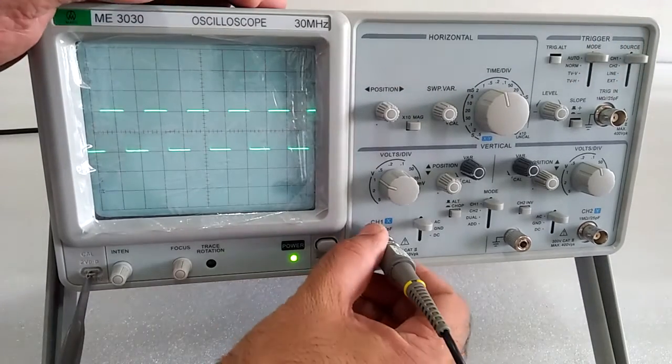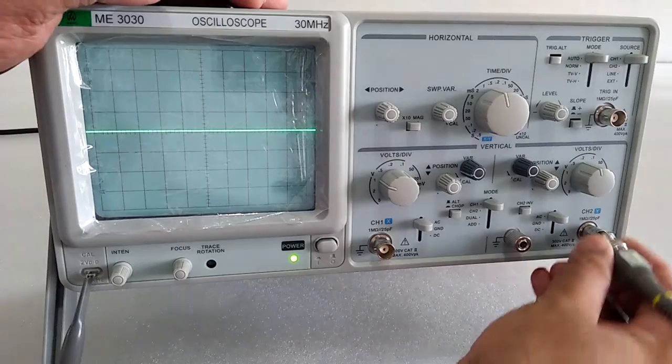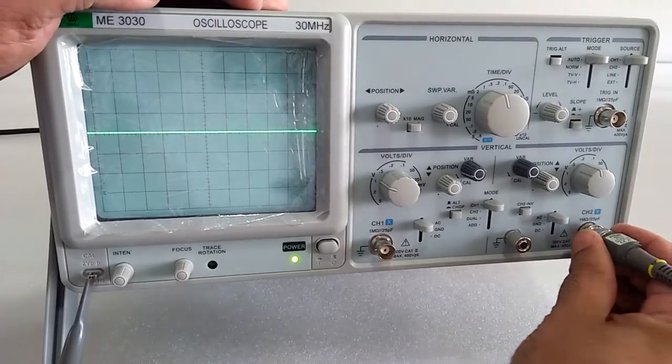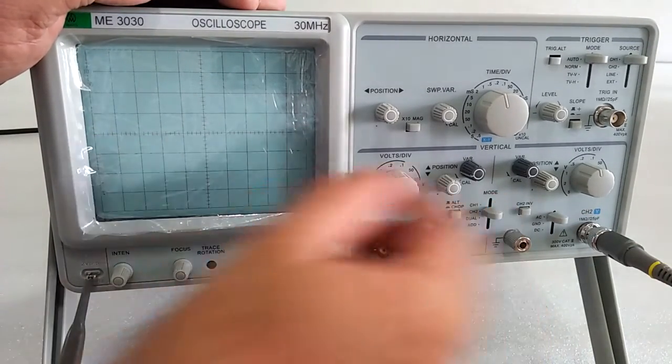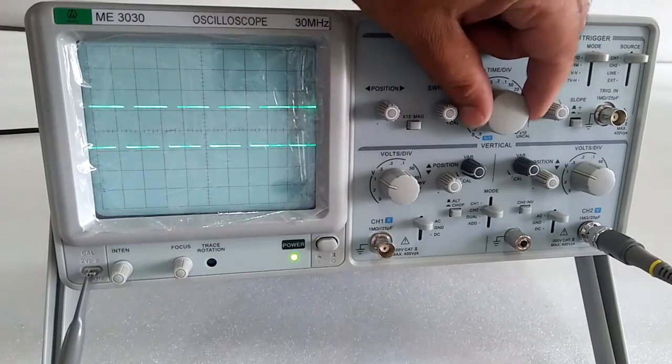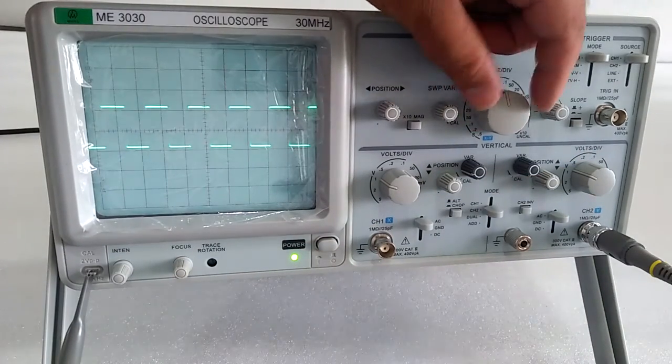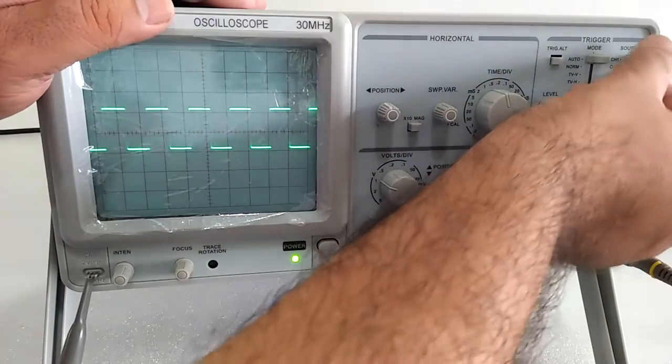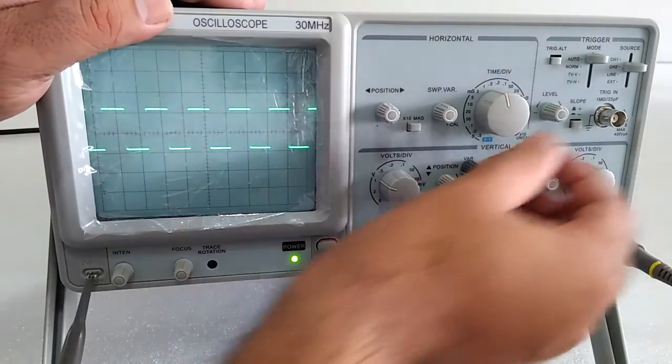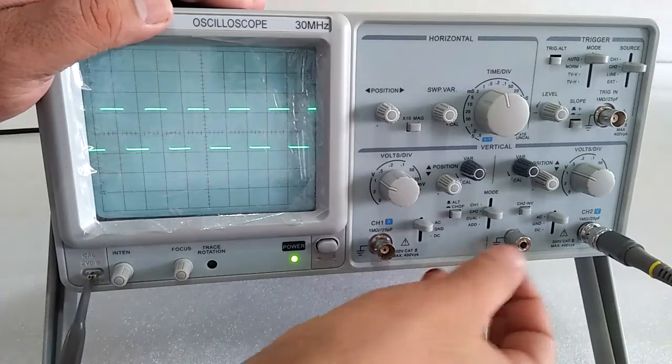For channel 2, use mode 2 and select channel 2. Select the wave and adjust the amplitude. Adjust the frequency. Set mode to channel 2 and source to channel 2 for stable operation. If not stable, make it stable with this control.